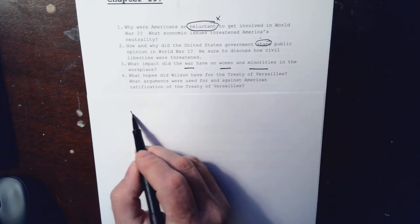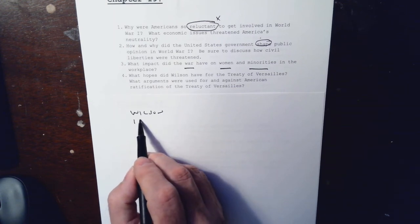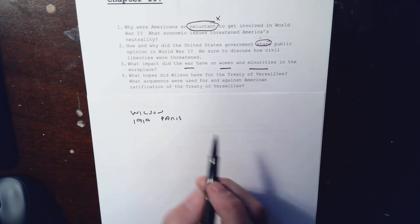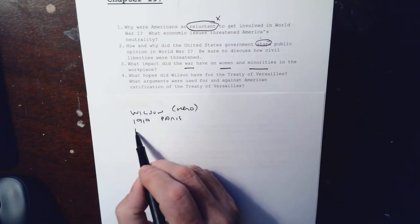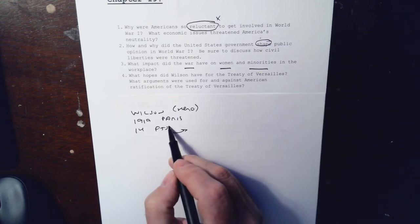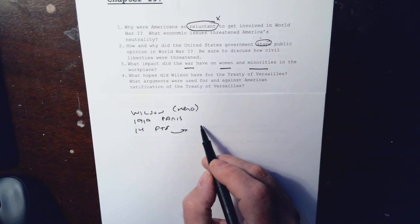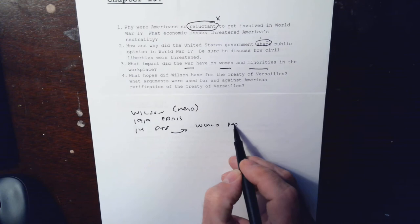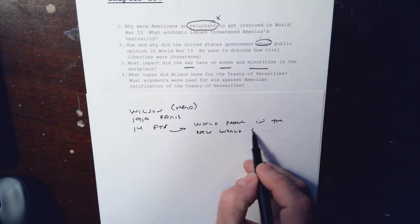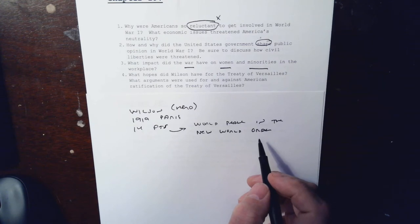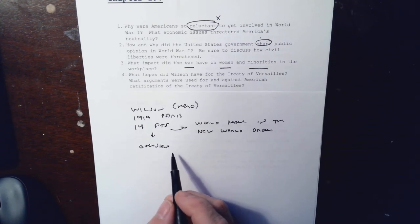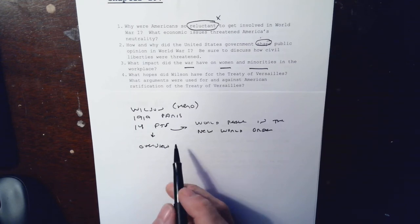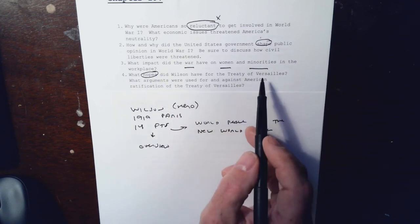Question four: you're looking at Wilson in 1919 Paris. Wilson is seen as a hero. He proposes his 14 Points — not 14 points in favor of America, but in favor of world peace and a new world order. I encourage you to give a brief overview of the 14 Points; just look them up and tell me what some of them are. The key here is you're dealing with hopes.